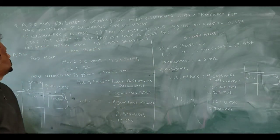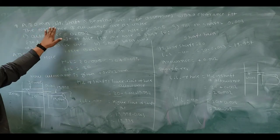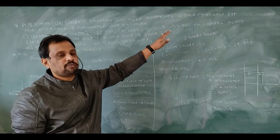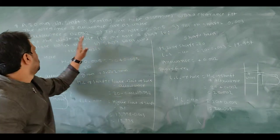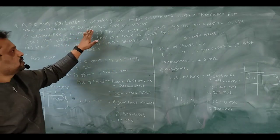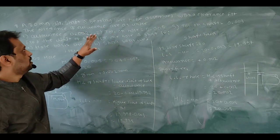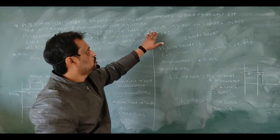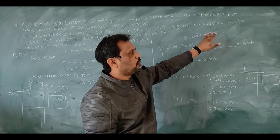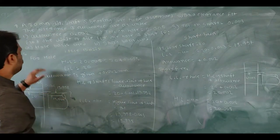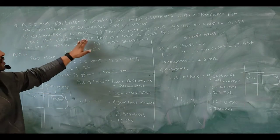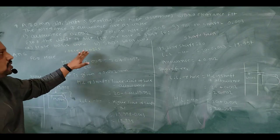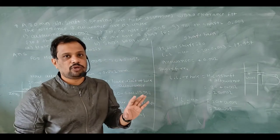The statement of the problem is like this: a 20mm shaft and bearing are to be assembled with clearance fit. The hole tolerance and allowance are as under — allowance: 0.002, tolerance on hole: 0.005, tolerance on shaft: 0.003. Find the limit of size for hole and shaft if hole basis system is used and shaft basis system is used.